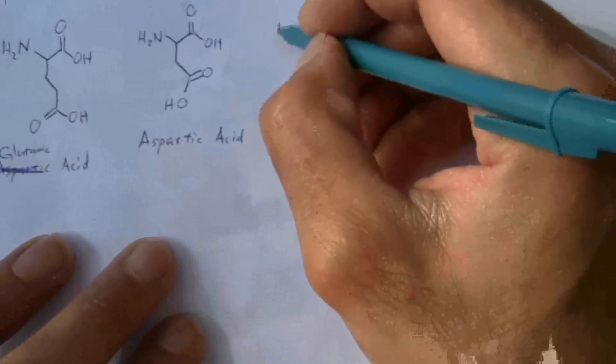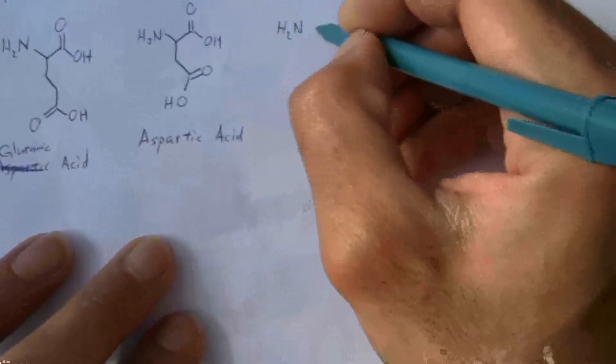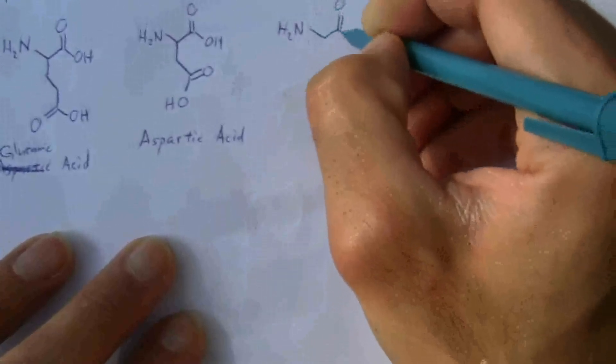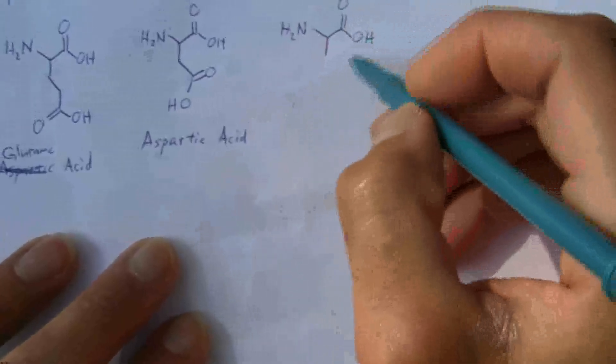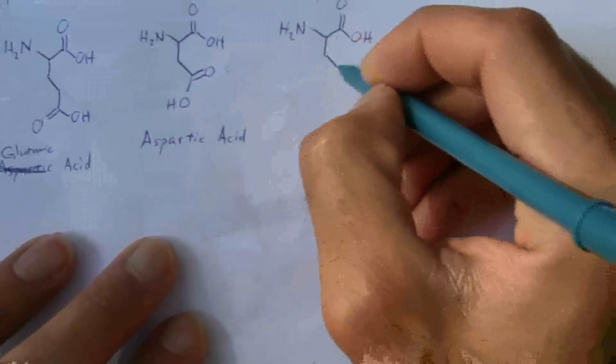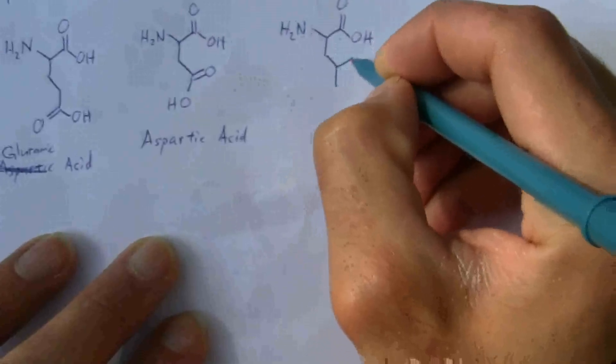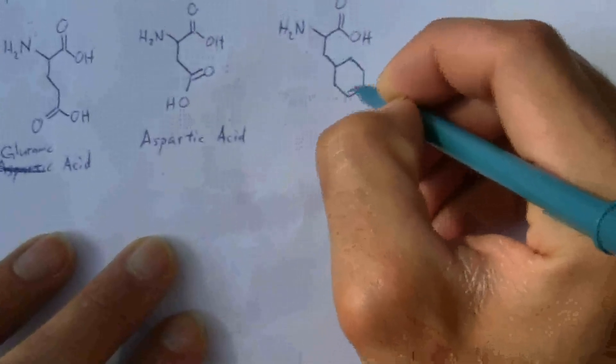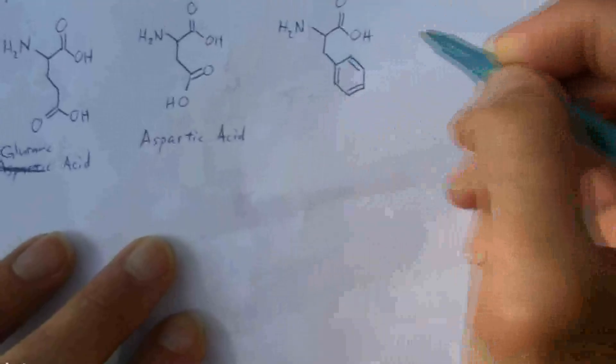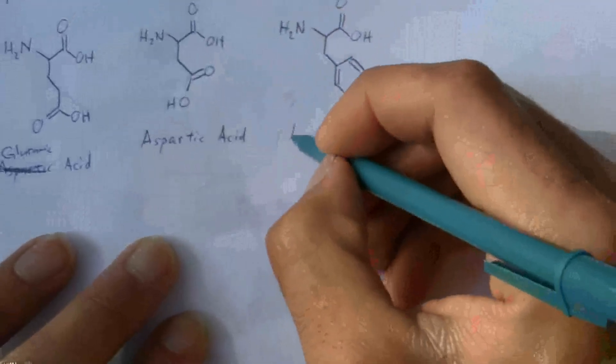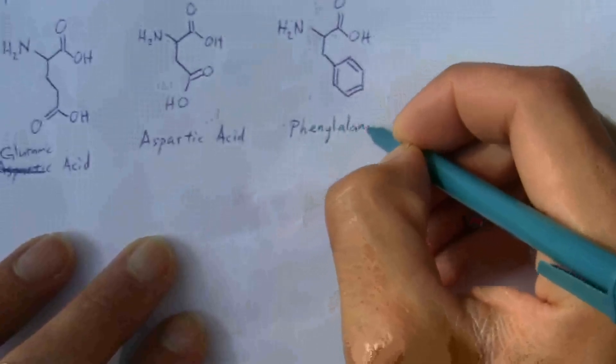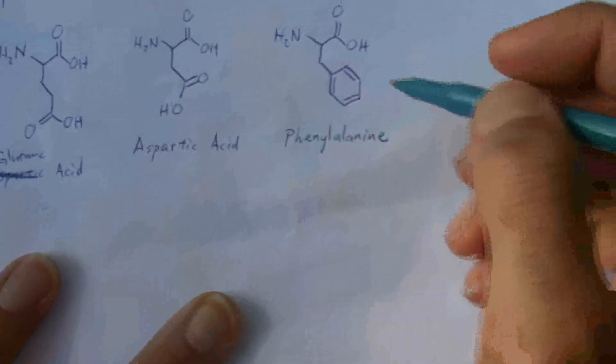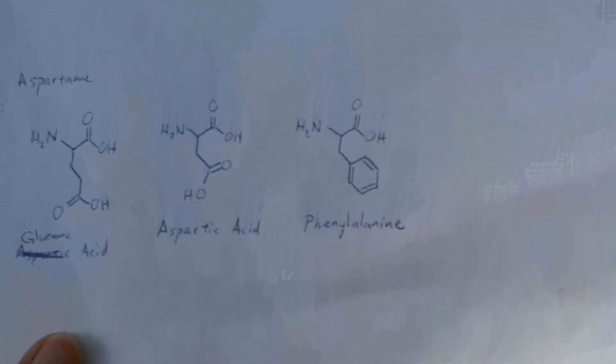The other amino acid looks like this. It has this group here, and this is phenylalanine. So this is the amino acid, the other amino acid.